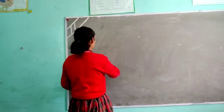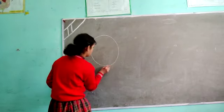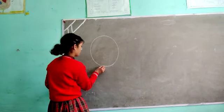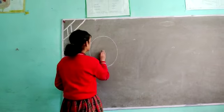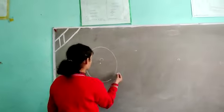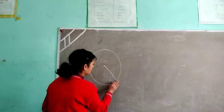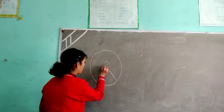So, let us draw a sector. This is the center point. And let us draw a radius, and another radius.